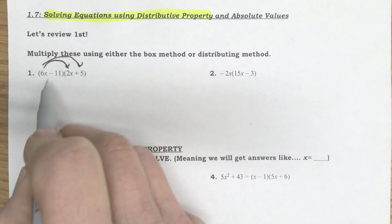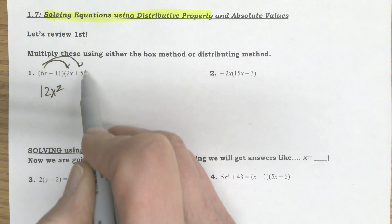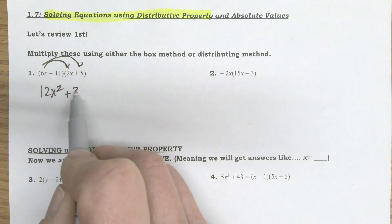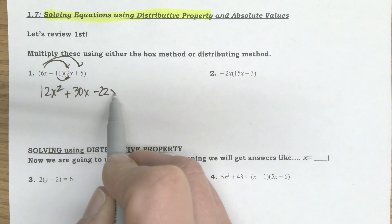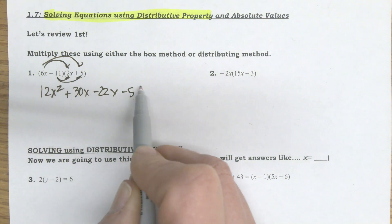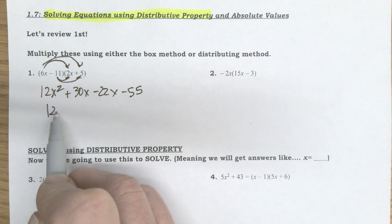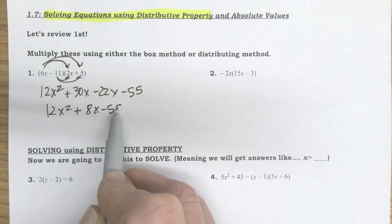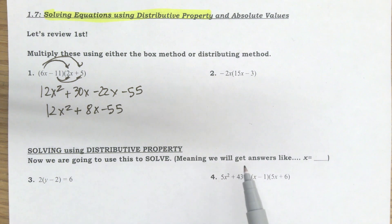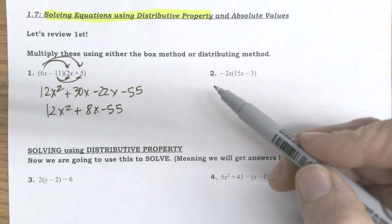So this would be 6x times 2x, 12x squared. 6x times 5 is plus 30x. Negative 11 times 2x minus 22x. Negative 11 times 5 is minus 55. And so I have 12x squared plus 8x minus 55. That would be my simplified form using the distributive property.